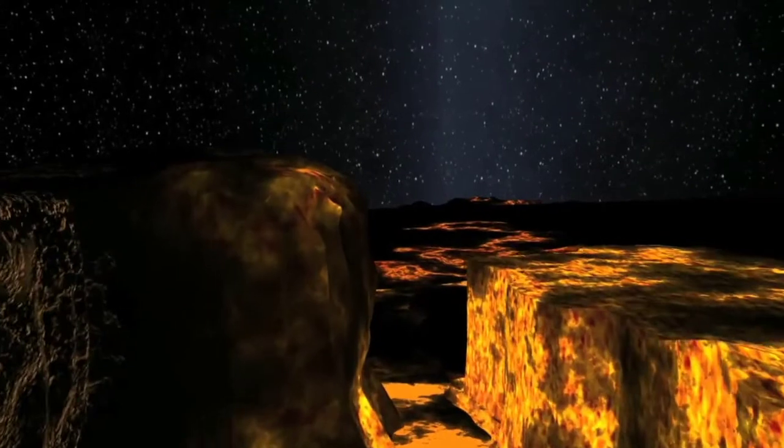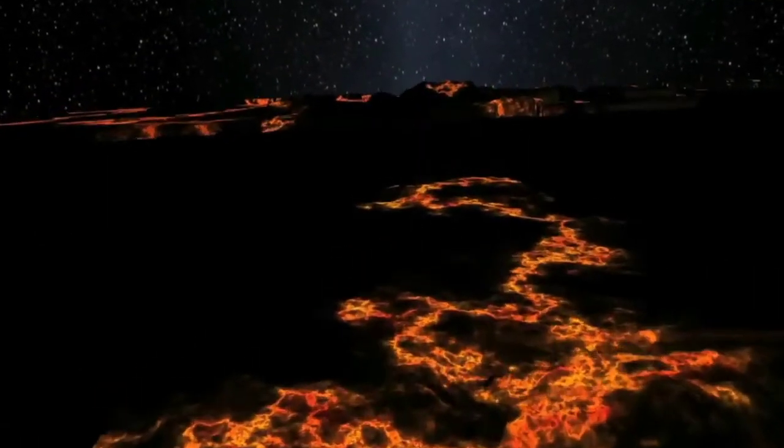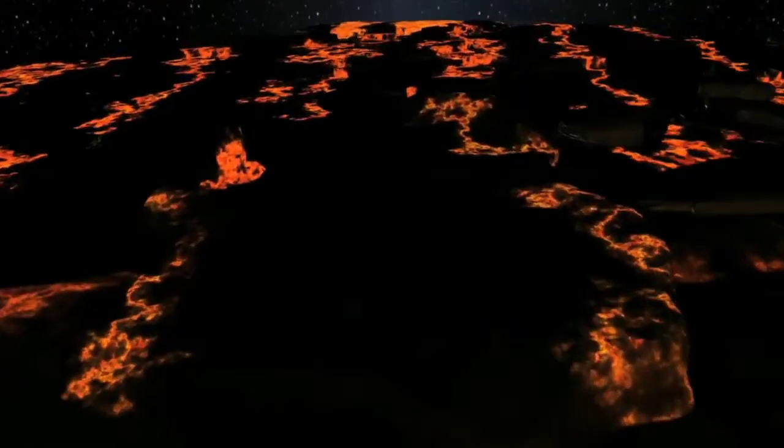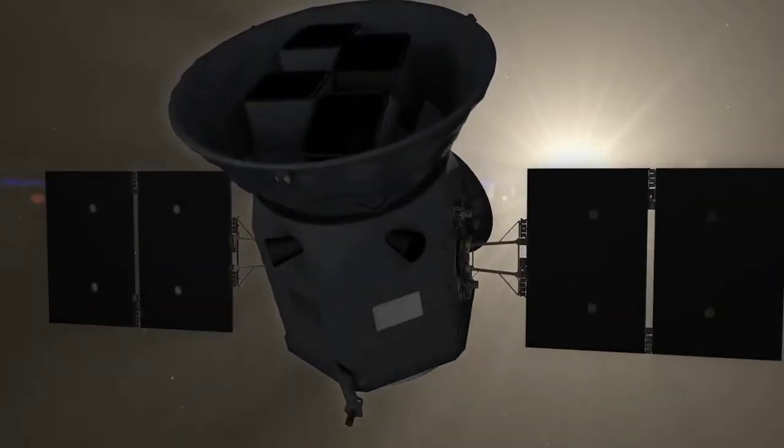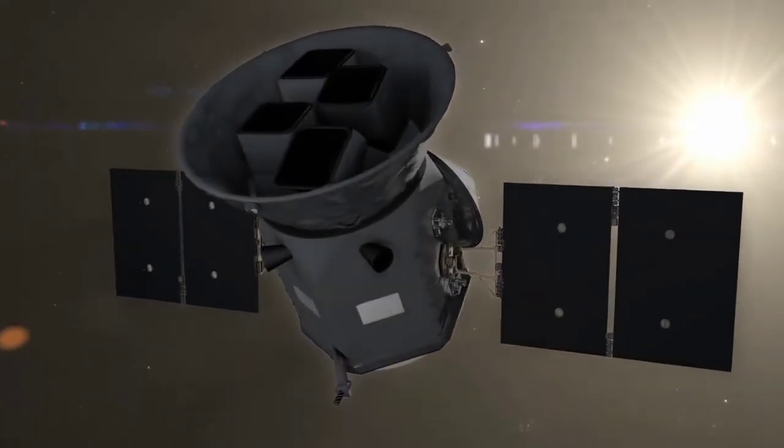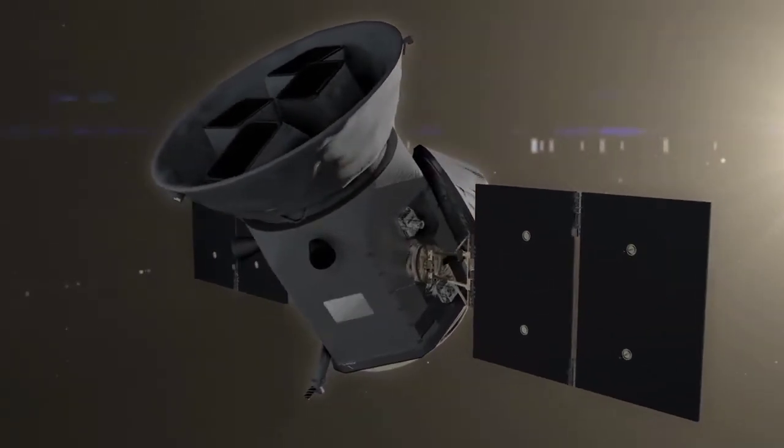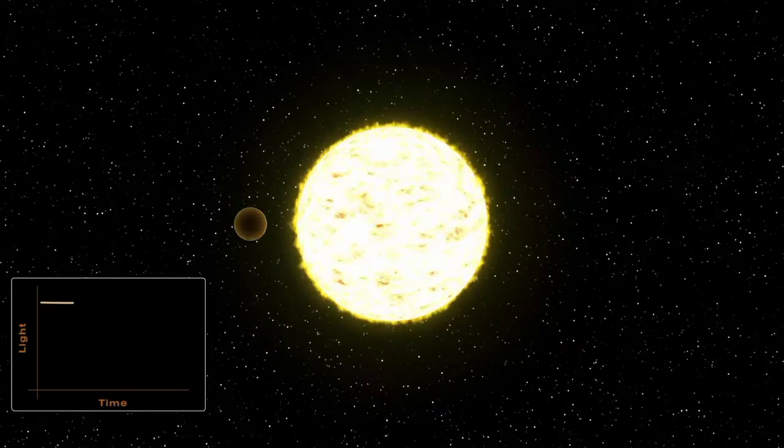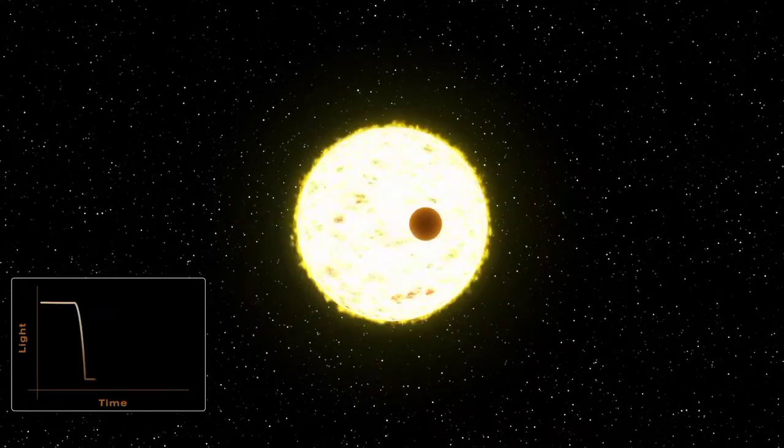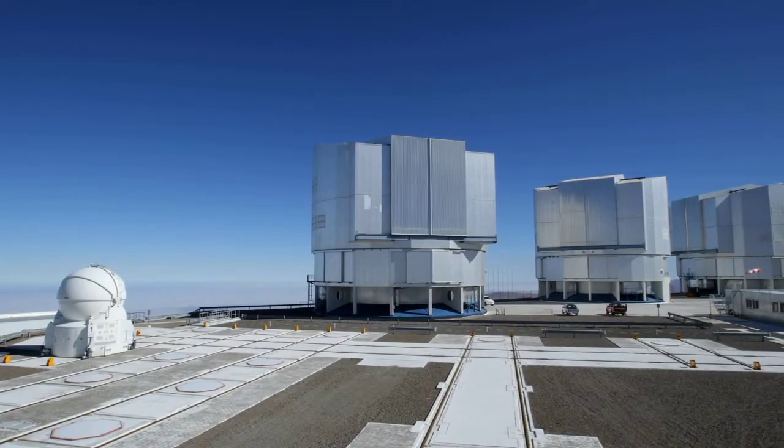NASA's TESS transiting exoplanet survey satellite found the planet in May 2020. TESS started observing it on May 13th and kept watching for almost a month. Over the next year, multiple ground-based observatories performed follow-up observations in different wavelengths.